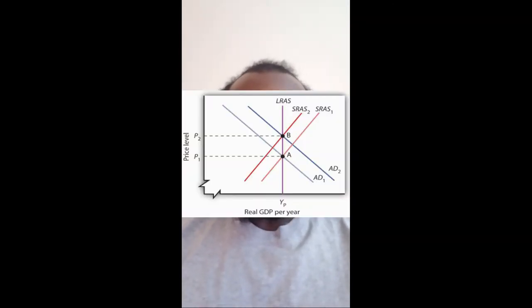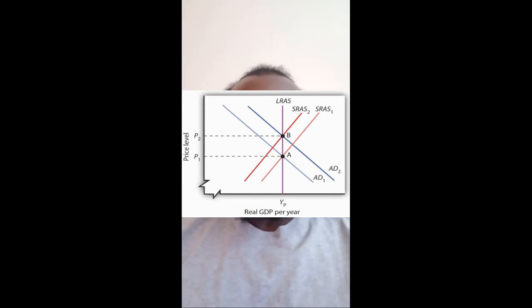One theory, rational expectations, suggests that the Fed can only really influence the rate of inflation in the economy, not the factors that determine real GDP. The theory goes that if people perfectly understand the impact of monetary policy upon them and upon others, they will act in a rational way to offset the effect, leading to a change in inflation in the long run rather than a change to the actual level of output in the economy.